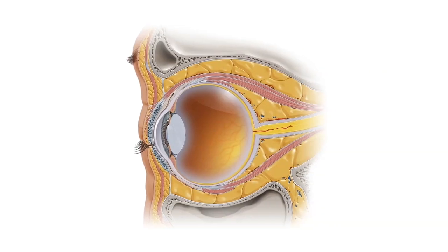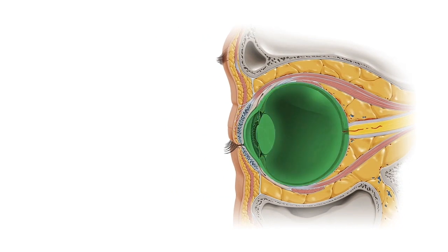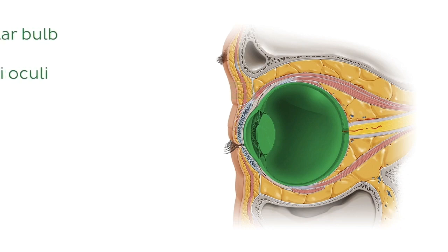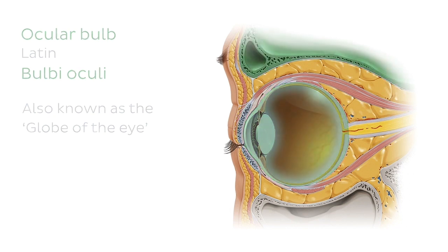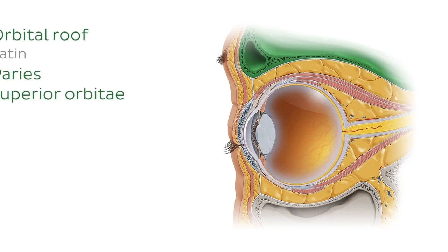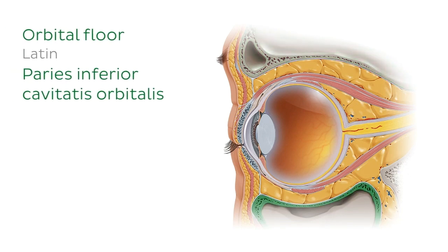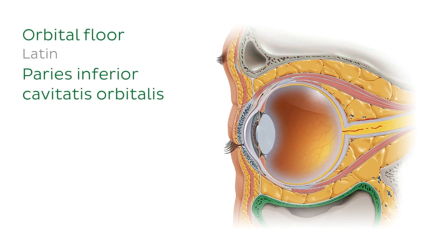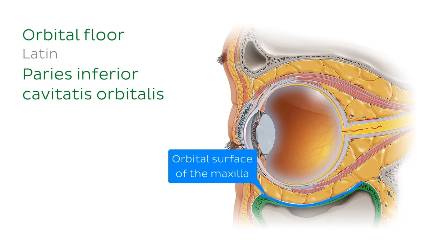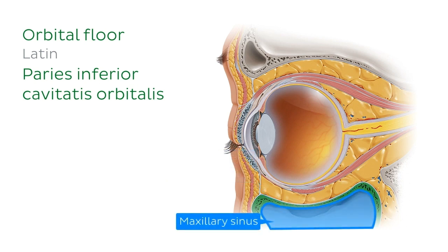As you can see, we're looking at a sagittal section of the orbit, or eye socket, in this illustration. The centre of the orbit is, of course, dominated by the eyeball — in anatomical terminology also referred to as the ocular bulb, or globe, of the eye. In our section, we can see the orbit nicely positioned between the orbital roof, which is largely comprised of the orbital process of the frontal bone, and the orbital floor found underneath. This is largely composed of the orbital surface of the maxilla, and we can even see a portion of the maxillary sinus just here.